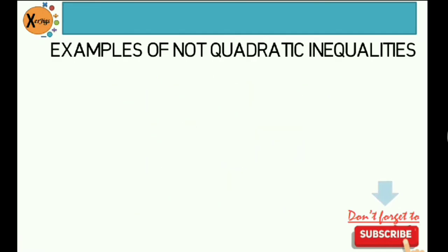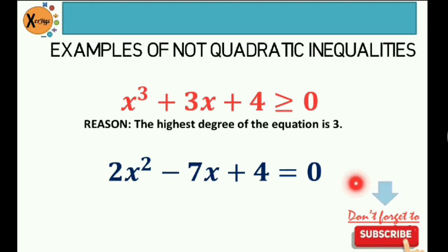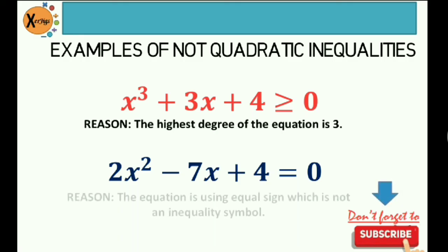Here are examples of expressions that are not quadratic inequalities. First, x³ + 3x + 4 ≥ 0 — this is not a quadratic inequality because the highest degree is 3. Remember, the highest degree should be 2. Another example, 2x² − 7x + 4 = 0 — this is not a quadratic inequality because of the presence of an equal sign, which is not an inequality symbol.